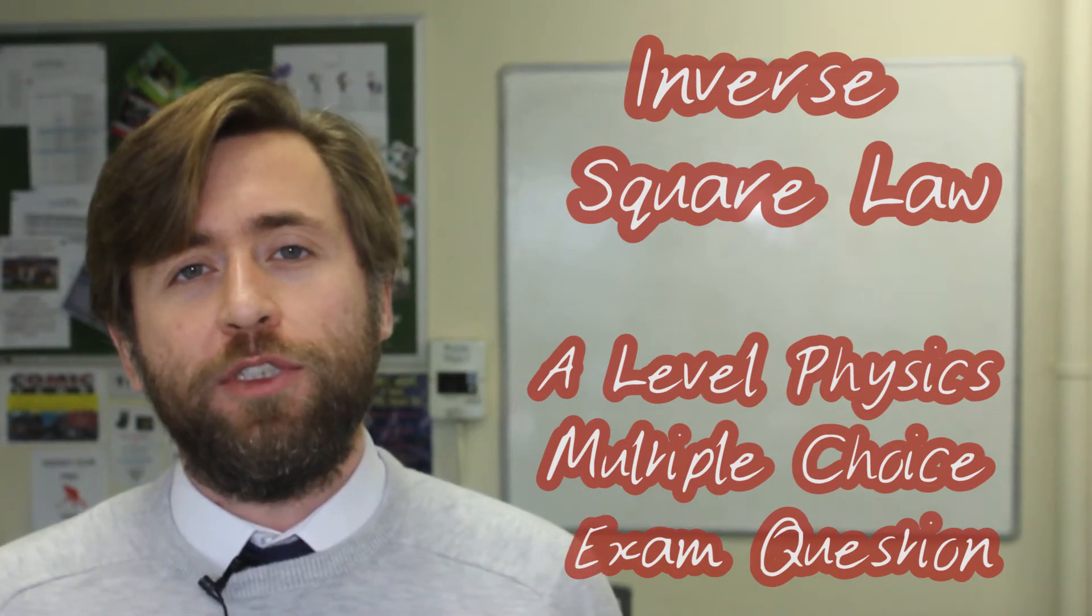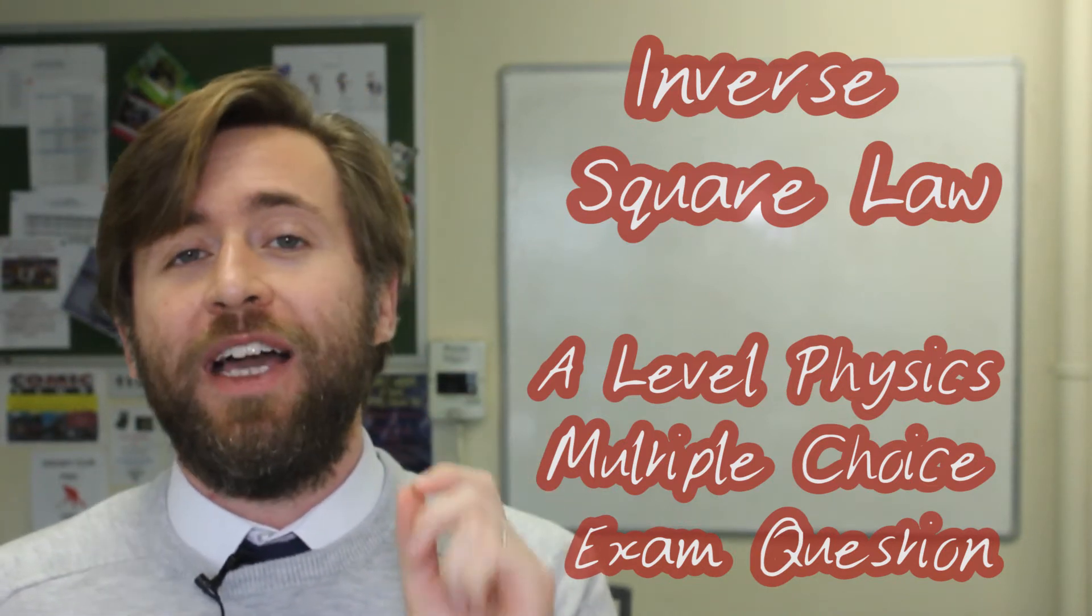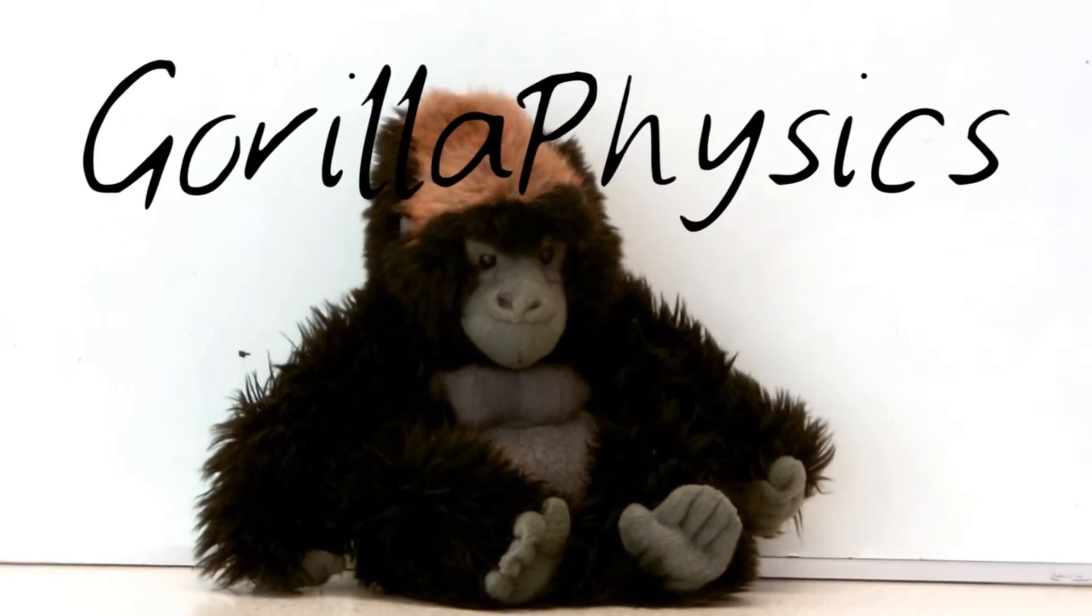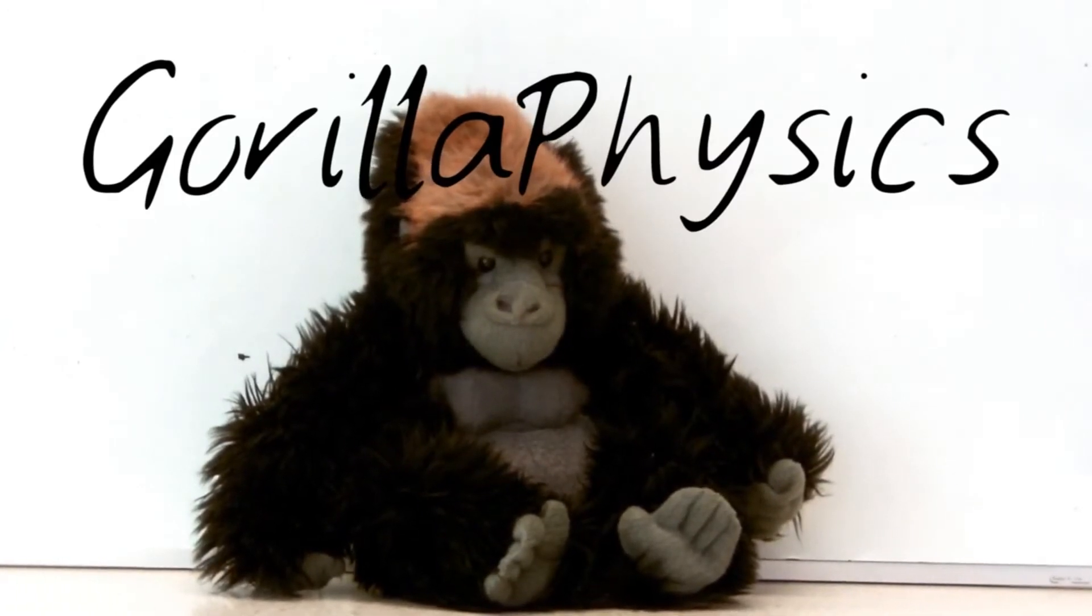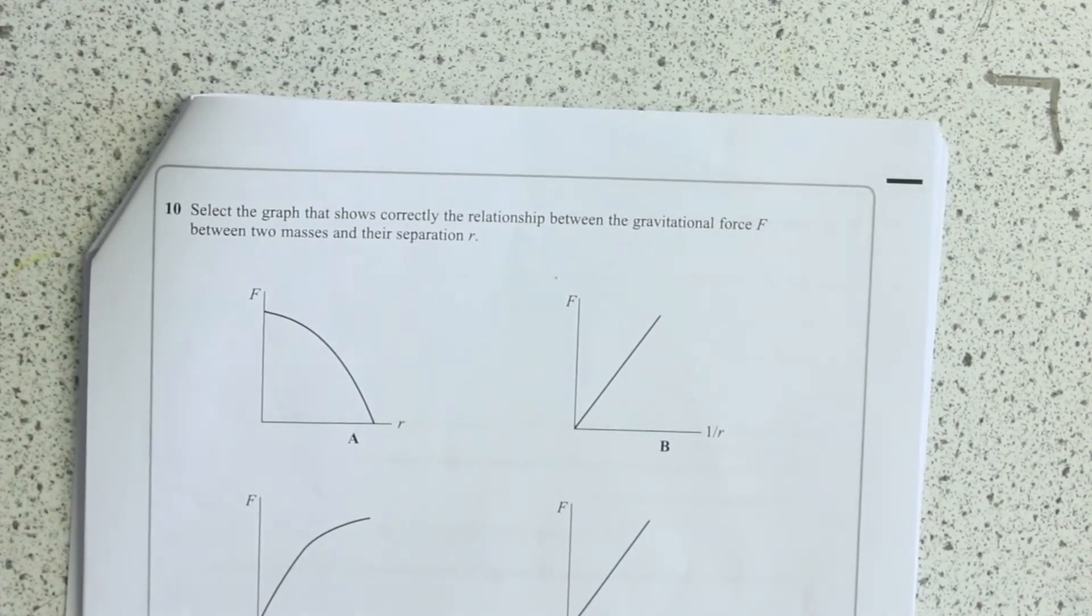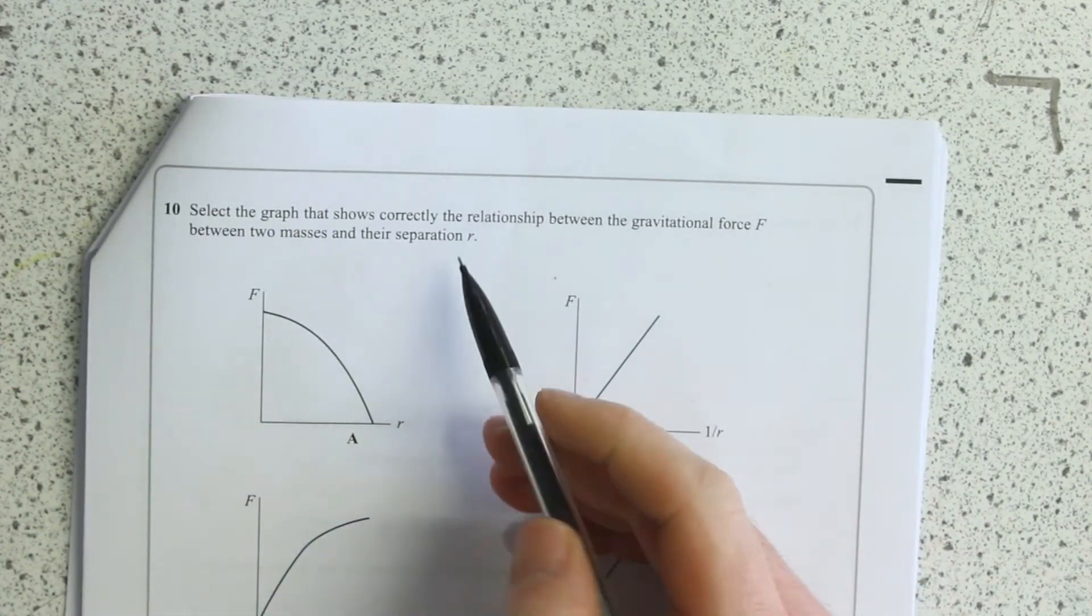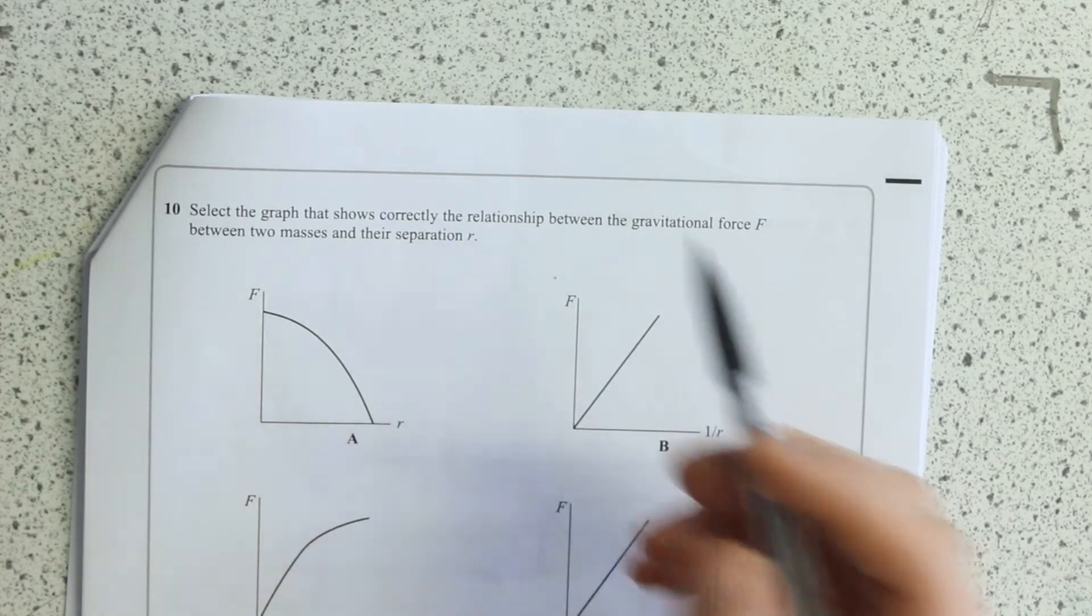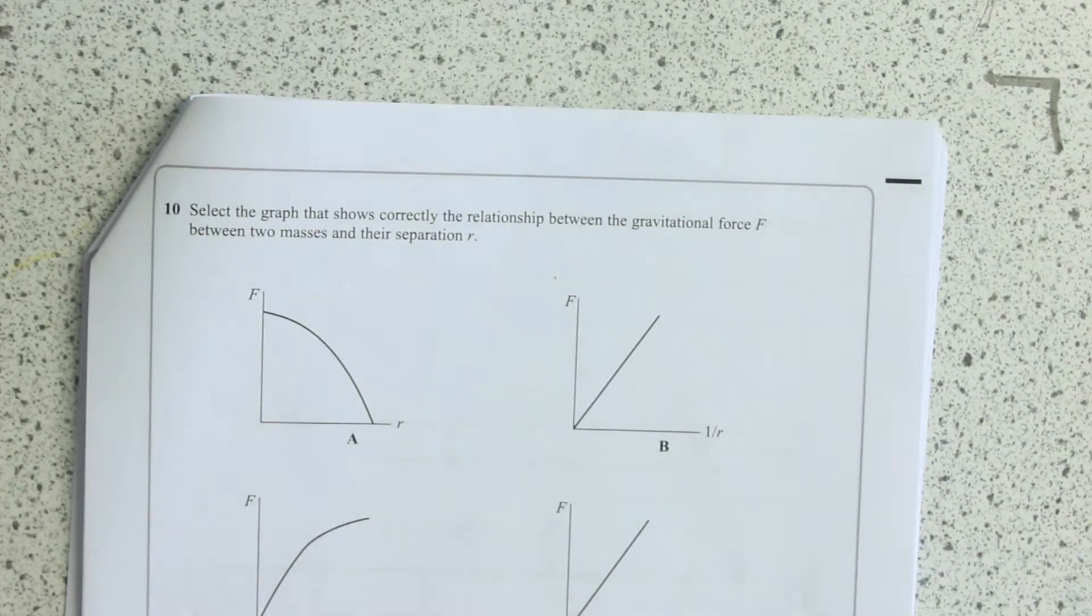So this is a multiple choice question. Make sure that you actually answer the question before you look at the answers and try to eliminate those distractors. Select the graph that shows correctly the relationship between gravitational force F, two masses, and their separation. Again, you can look at the equation sheet for any of this stuff.